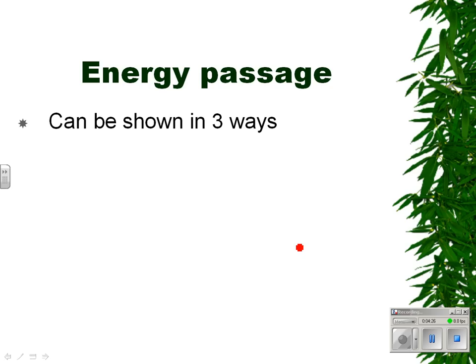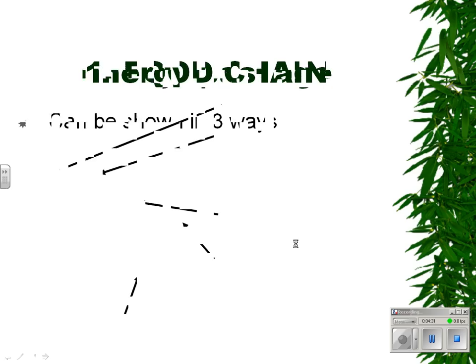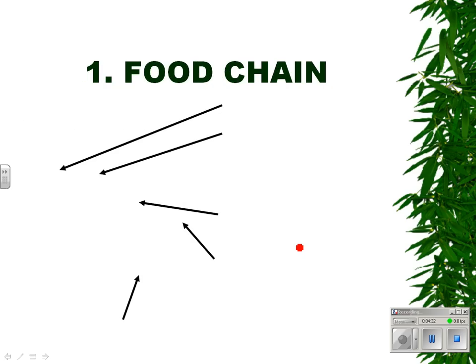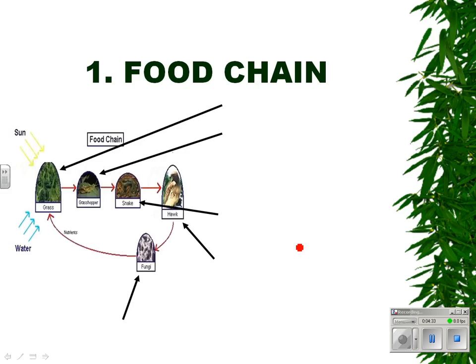Passage of energy. We can show the passage of energy through an ecosystem in three ways. Here's the first way, and many of you have heard of this before — something called a food chain.